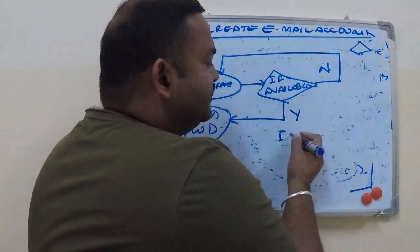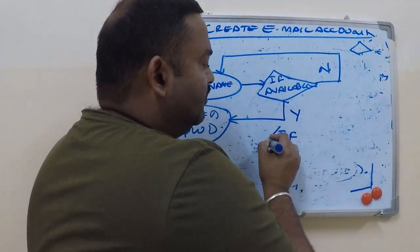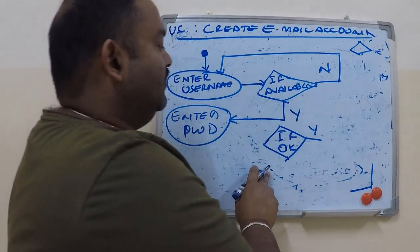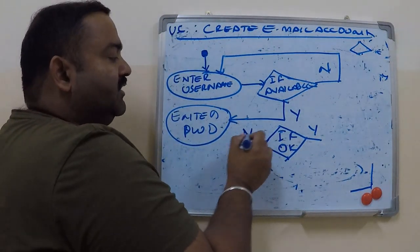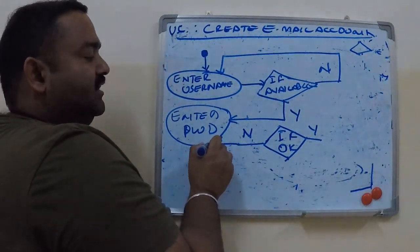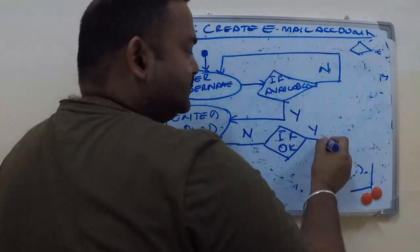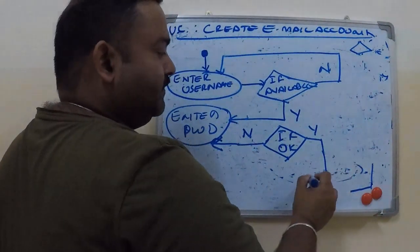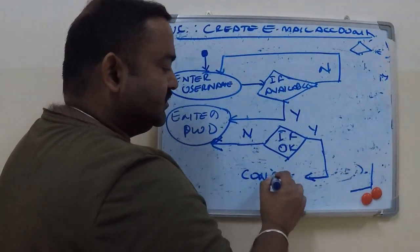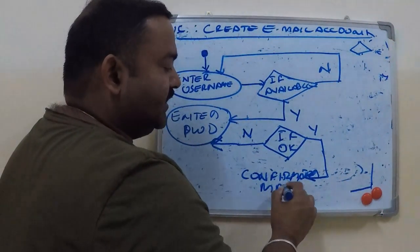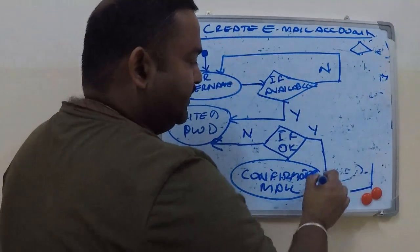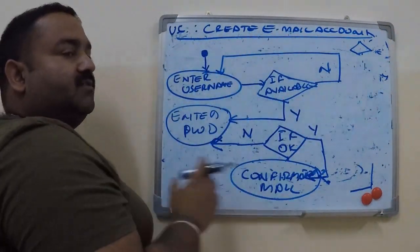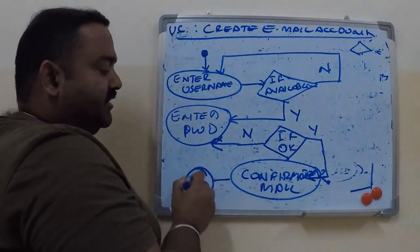For passwords, the mail server also checks the strength. If the password is okay according to the rules — yes — then the system sends you a confirmation. If it is not okay — no — then it asks you to enter the password again. After you get the confirmation, this workflow is over, and the end state is denoted by a bullseye.